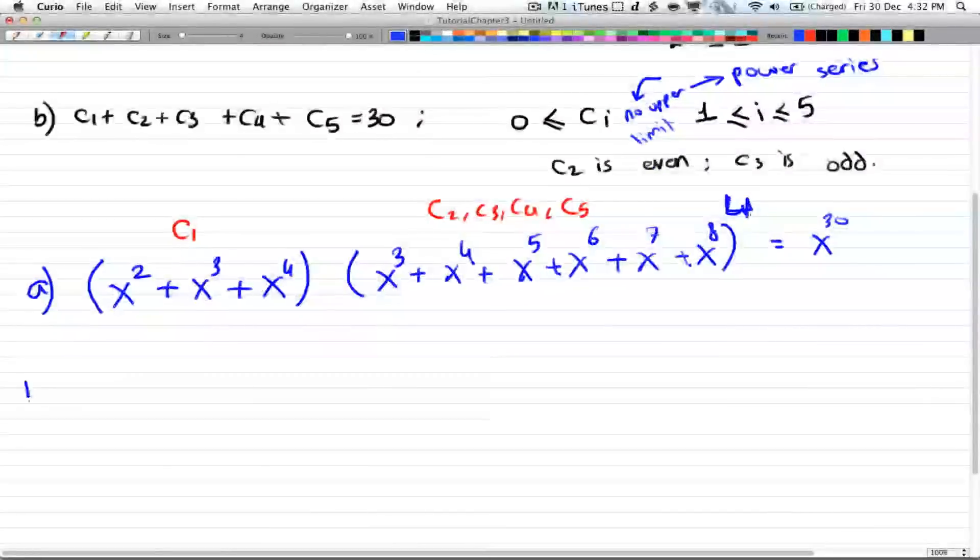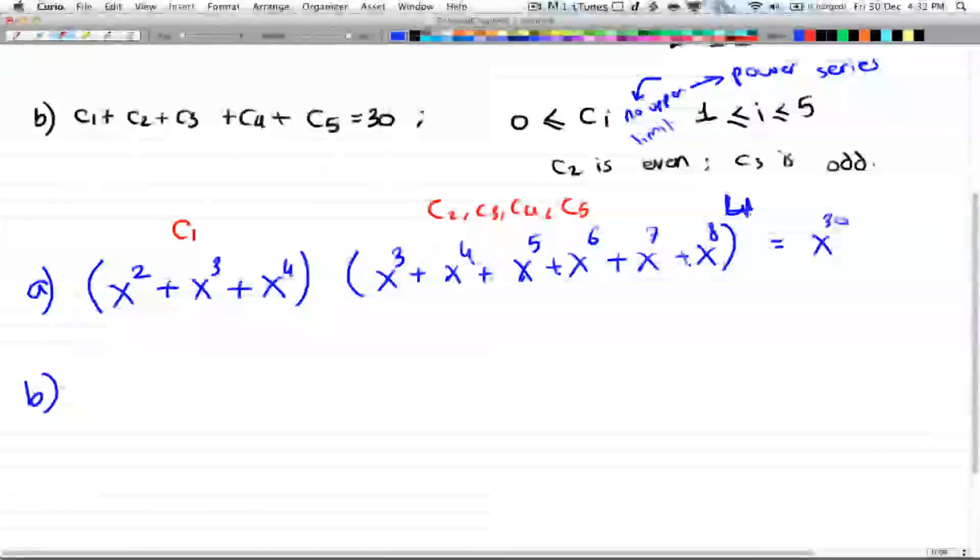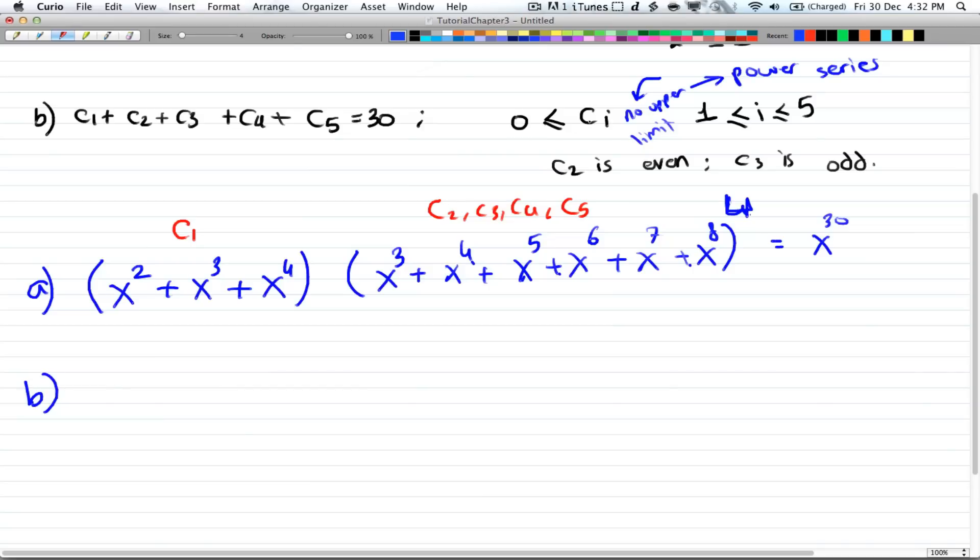Now for part B, you have the same question but with different conditions. So you have all the numbers are greater than or equal to 0, and there is no upper limit. And C₂ is even, and C₃ is odd. Alright, so let's take care of the cases where there is no restriction, which is C₁, C₄, and C₅.